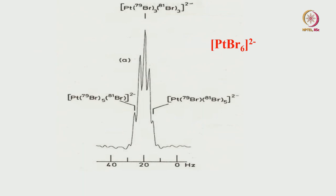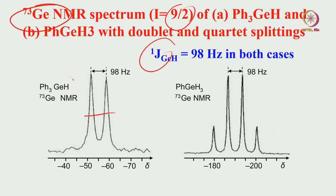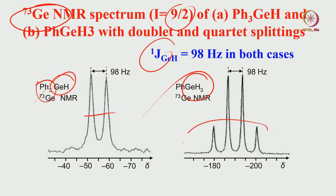The last example is germanium NMR: germanium has spin-9/2, making it a quadrupolar spin. When coupled to a proton, you get a doublet (GeH). For GeH3, it must be a quartet due to three equivalent protons. The phenyl (Ph) part coupling is far away and not a concern here. The germanium-proton coupling constant is approximately 98 Hz, close to 100 Hz. This is how we can analyze germanium NMR of a quadrupolar spin coupled to spin-half nuclei.